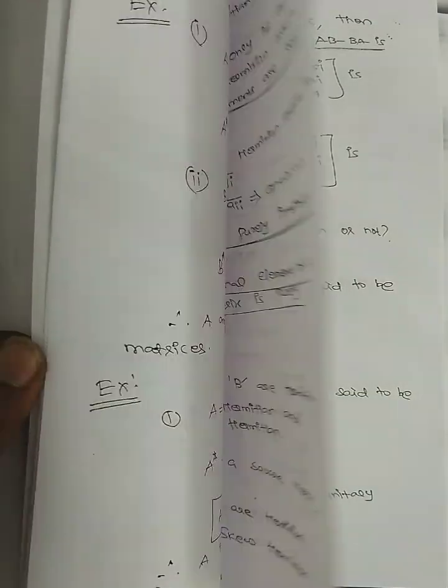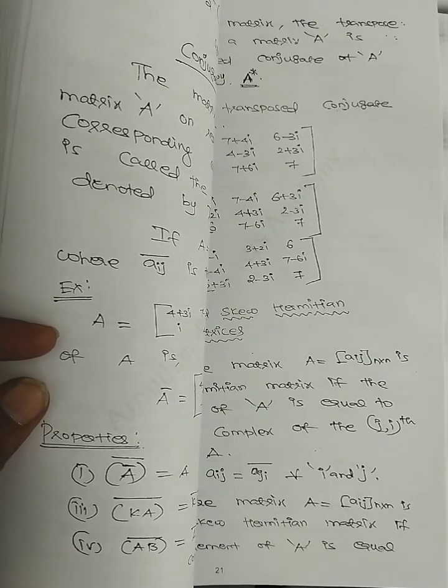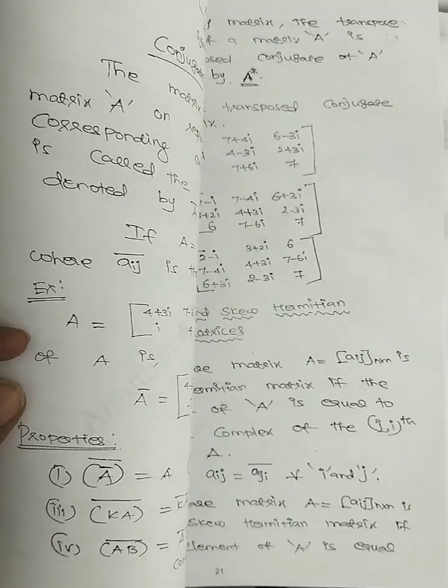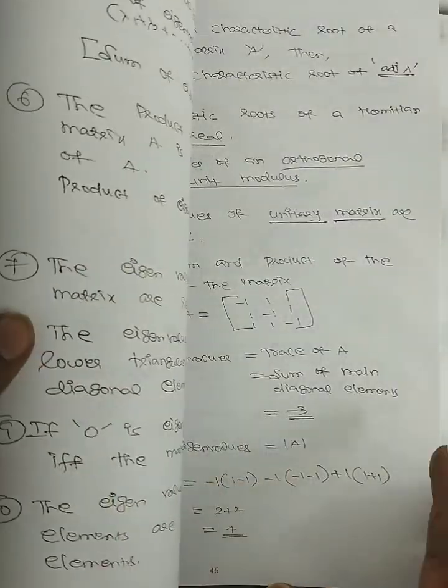This is one part. In this part, we will talk about matrices: symmetric, skew-symmetric, Hermitian, skew-Hermitian, orthogonal, unitary matrices, eigenvalue, eigenvectors. This is another part.